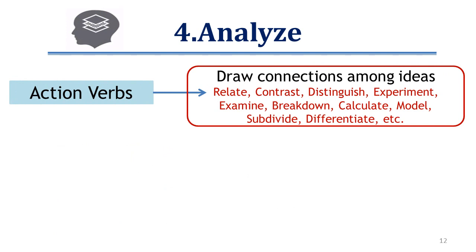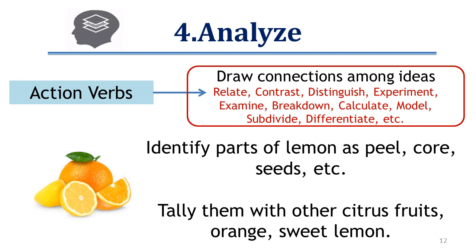At the analyze level, one requires higher and critical thinking than for previous sub-domains — the ability to break down material into its parts so that its organizational structure is understood. Action verbs include relate, contrast, distinguish, experiment, examine, break down, and others. For example: identify parts of a lemon such as the peel, core, and seeds, and compare them with other citrus fruits like orange and sweet lemon.